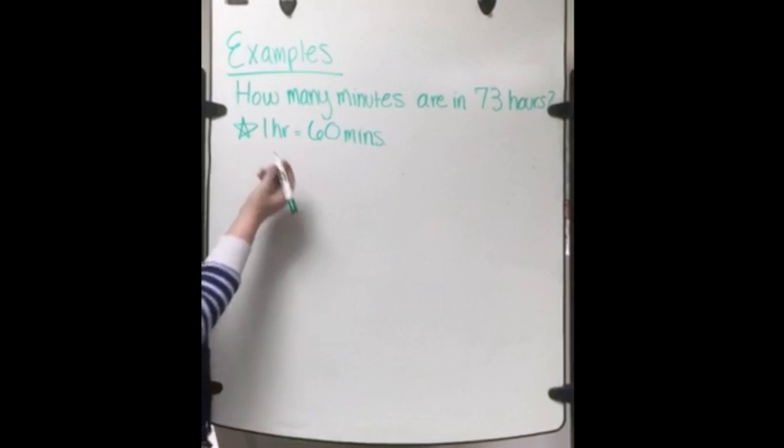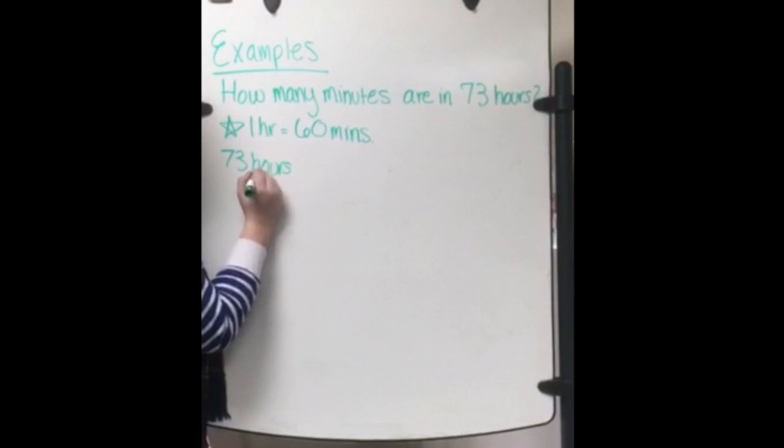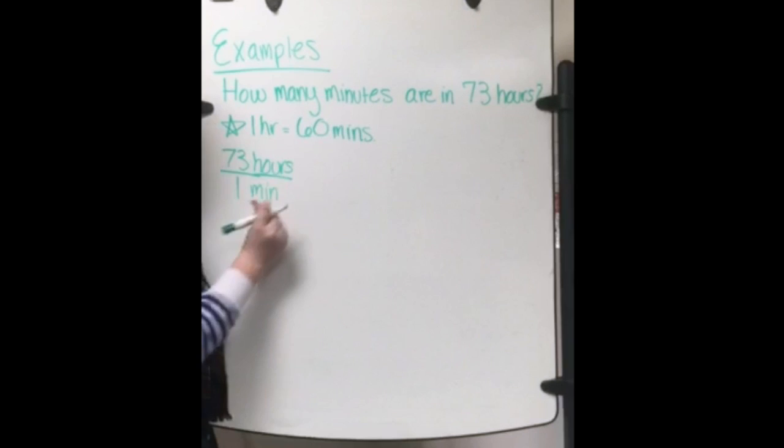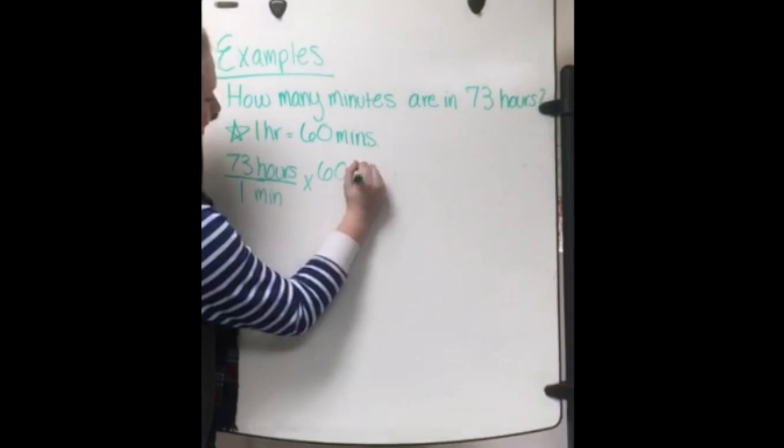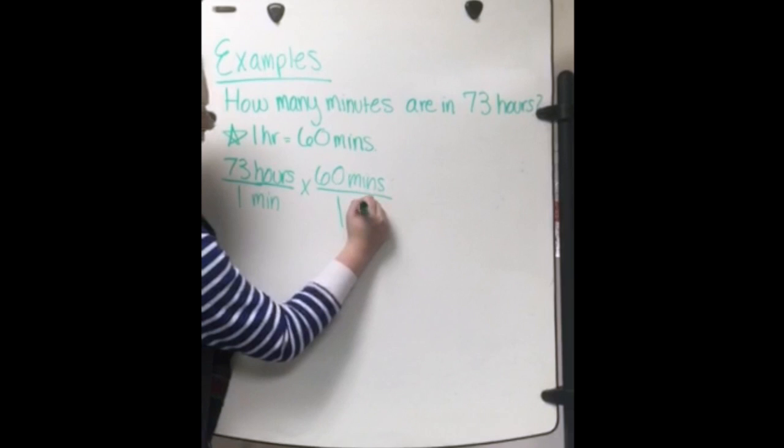To start off, we put the 73 hours. Make sure to put your units over 1. And notice that we put the units here too. Multiply that by 60 minutes over 1 hour.